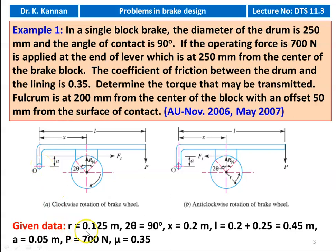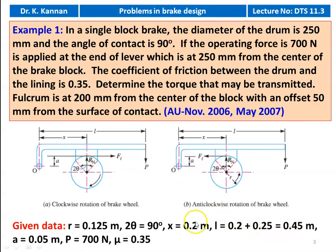The data given: radius of the brake drum R = 0.125 meter. We are given the diameter, so we take the radius. 2θ = 90 degrees. X, the distance of the fulcrum from the center of the block, is 0.2 meter. Length of the lever L = 0.2 + 0.25 = 0.45 meter. The offset A = 0.05 meter. The operating force P = 700 Newton, and μ = 0.35.